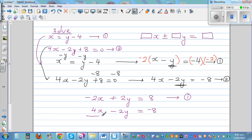Now I'm going to add these two equations. So if you add it, this and this gets cancelled. So negative 2x plus 4x is 2x. So 2x is equal to 0. So x is equal to 0.